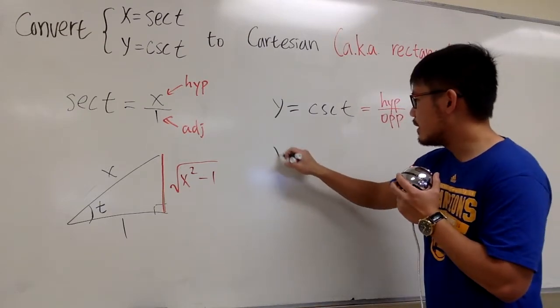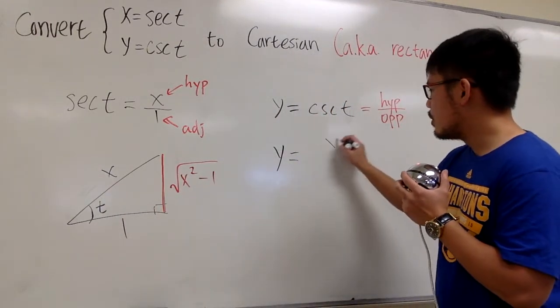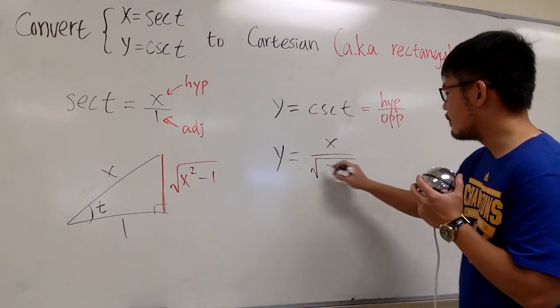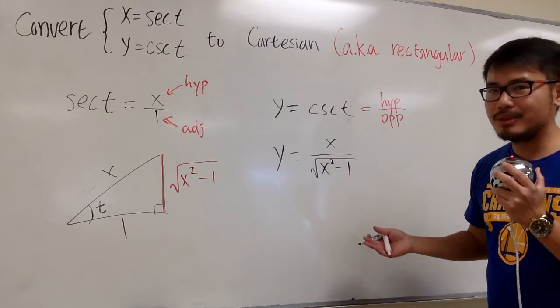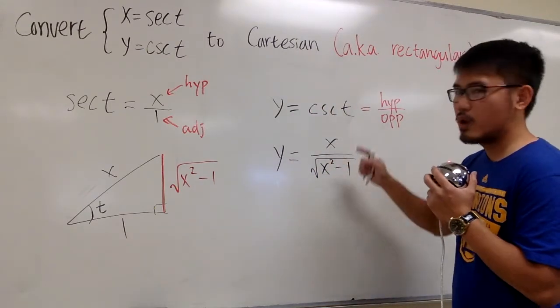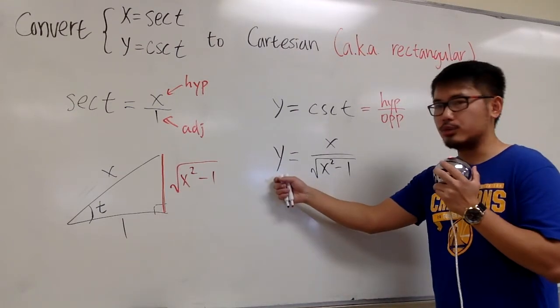So we can say y is equal to x over that, which is square root of x squared minus 1. This is technically it, but let me tell you, whenever we are doing this kind of things, whenever we end up with a square root, usually we like to square both sides.